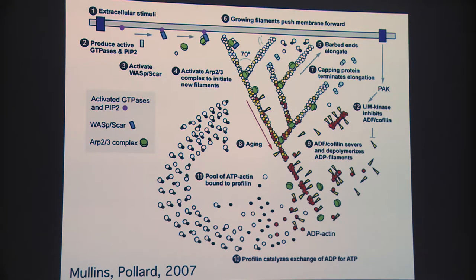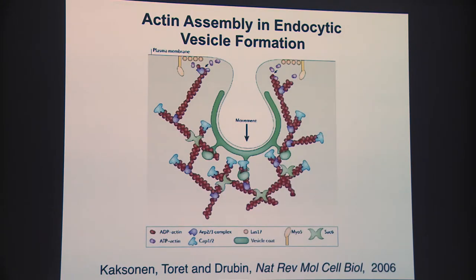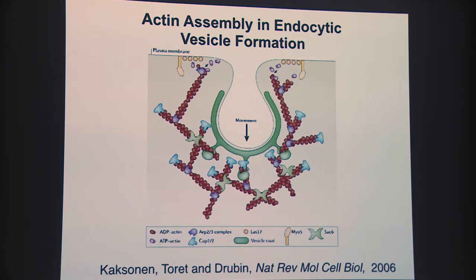For our work, this has been a really important framework, because what attracted us to endocytosis—we're really a cytoskeleton lab—is that in budding yeast, where we began most of our studies, during endocytosis the assembly of actin, shown in red, is absolutely essential to invaginate the membrane, to pull off endocytic vesicles, and for vesicles to undergo scission. We study this system as a way to understand how forces generated by assembling actin are harnessed to do work for biological processes. It's proved to be a very nice model.